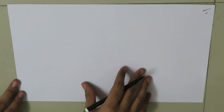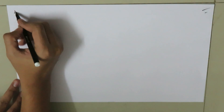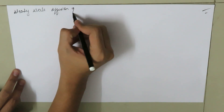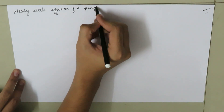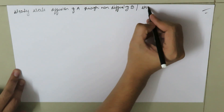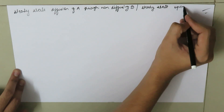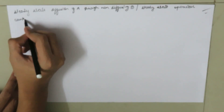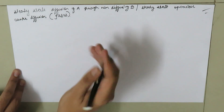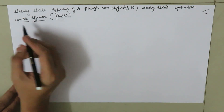Today we will study two concepts: steady-state diffusion of component A through non-diffusing component B, and steady-state equimolar counter diffusion of component A into component B. We will consider only gases, and we know our general governing equation.